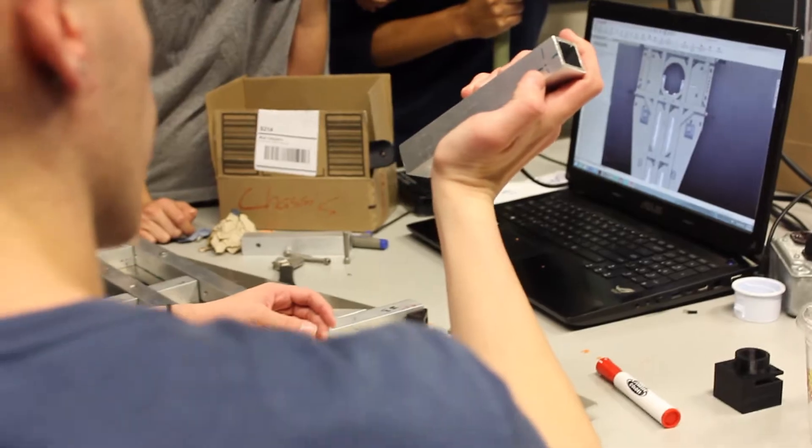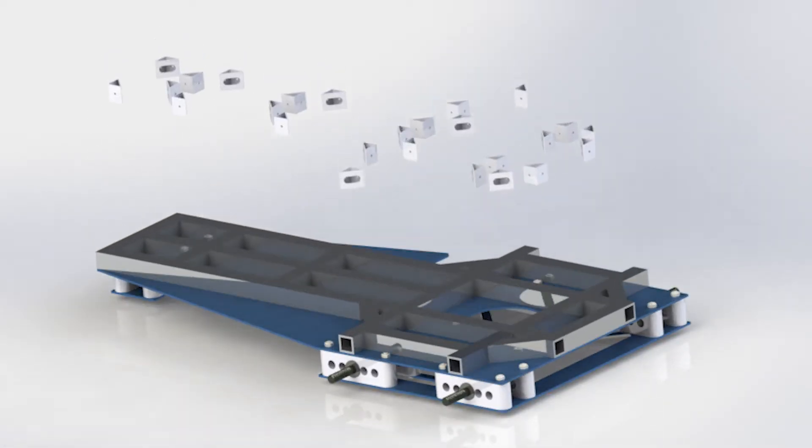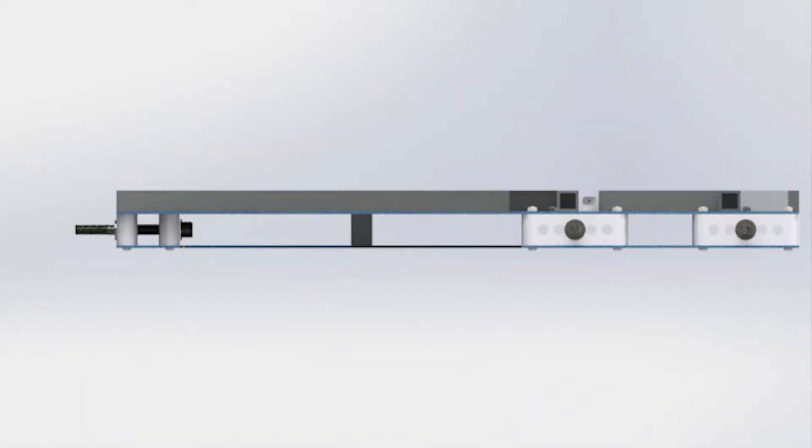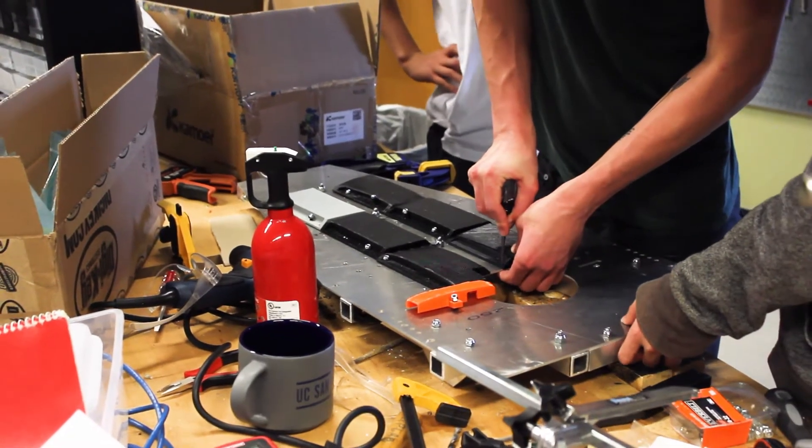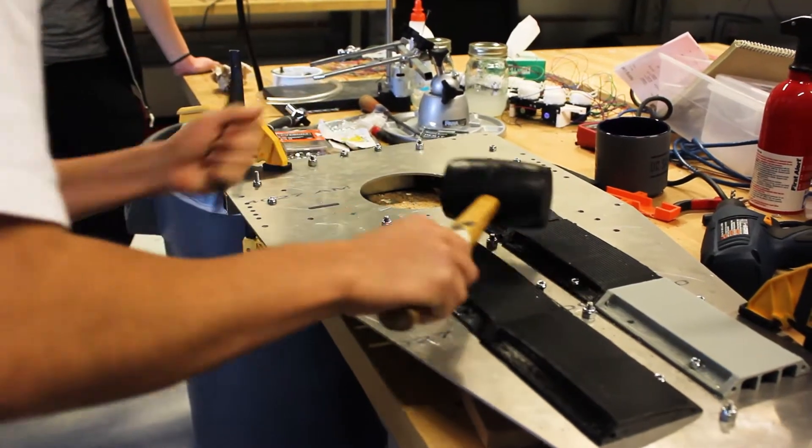Our chassis incorporates a network of beams inspired by a mammal's vertebrae. The long central columns and branches distribute loads throughout the system so that the rover can undergo torsion and resist bending.